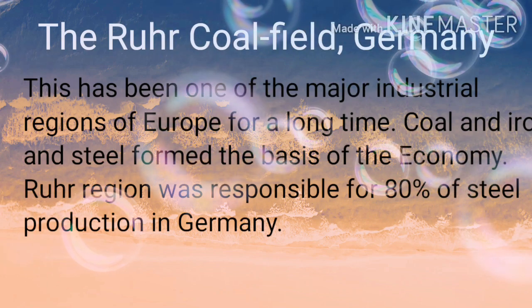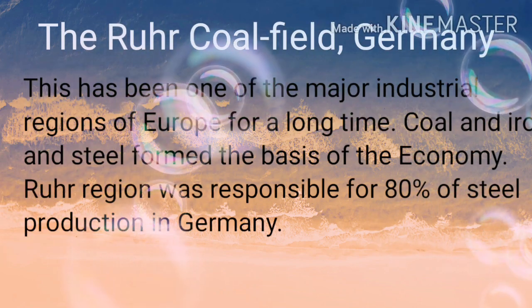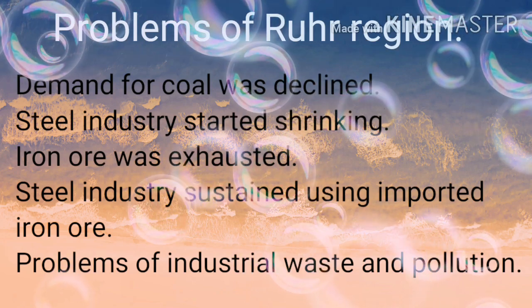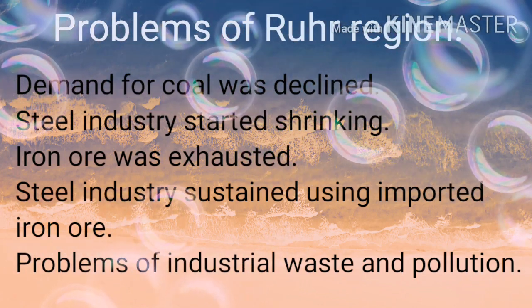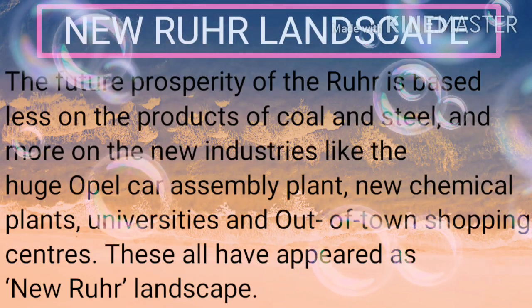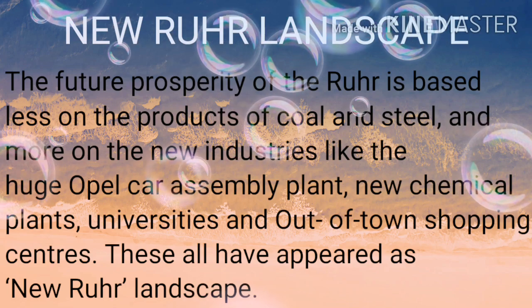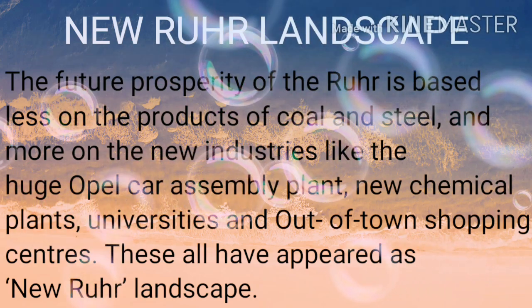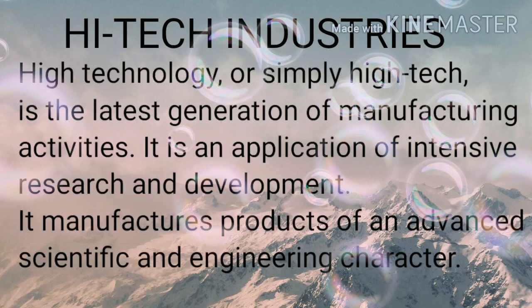The Ruhr coalfield in Germany has been one of the major industrial regions of Europe for a long time, with coal, iron, and steel forming the basis of its economy. The Ruhr region was once responsible for 80% of Germany's steel production. Problems arose as demand for coal declined, the steel industry shrank, iron ore was exhausted, and industrial waste and pollution increased. Steel sustained using imported iron ore.